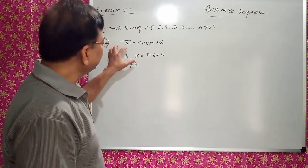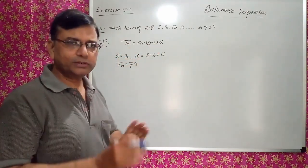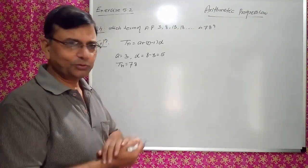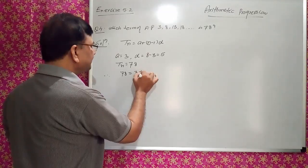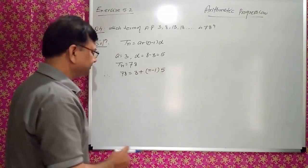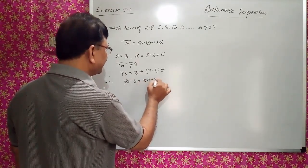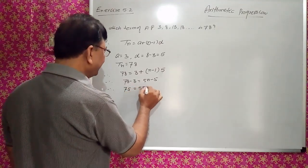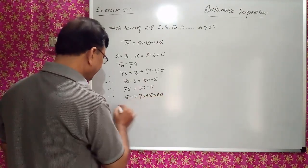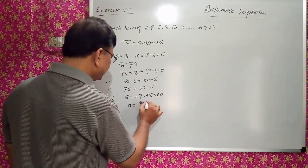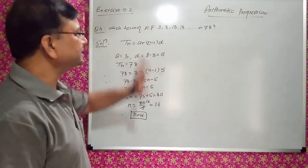As I told you, in any AP problem there are 4 parameters. Three will be given and the fourth we have to find. So: 78 = 3 + (N-1)×5. Therefore 5N - 5 = 75, so 5N = 80, therefore N = 16. So the 16th term of this AP will be 78.